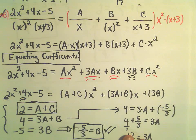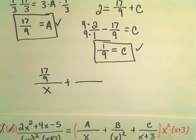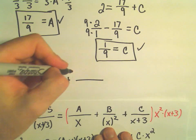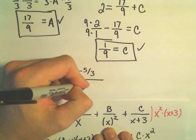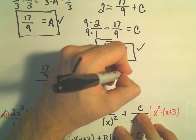It says it's A over x. So we'll get 17 over 9 all over x plus B. And again, we found B to be negative 5 thirds down here. So we'll have negative 5 thirds over x squared.